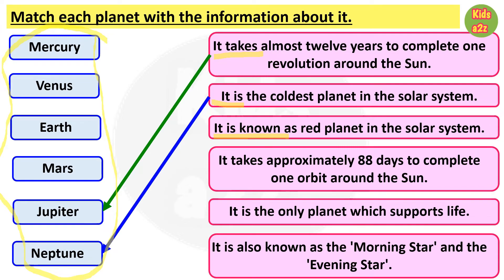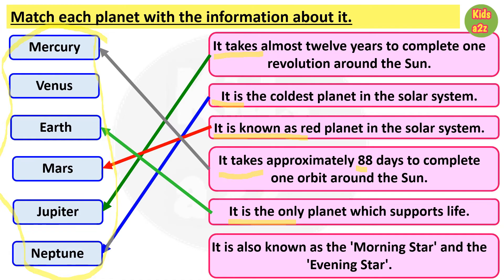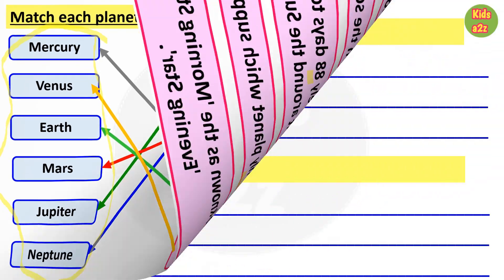Number three: it is known as the red planet — that means Mars. Number four: it takes approximately eighty eight days to complete one orbit around the Sun — they need to match it with Mercury. Next: it is the only planet which supports life — that is Earth. And the last one: it is also known as the morning star and the evening star — they need to match it with Venus.